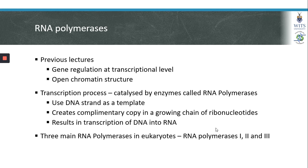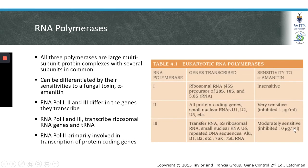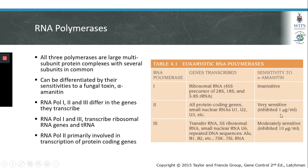In eukaryotes there are three major RNA polymerases: RNA polymerase 1, 2, and 3. All three are large multi-subunit protein complexes with several subunits in common. However, they can be differentiated by their sensitivities to a fungal toxin called alpha-amanitin. RNA polymerase 1 is insensitive to alpha-amanitin, RNA polymerase 3 is moderately sensitive, and RNA polymerase 2 is very sensitive. These differential sensitivities have been used to study the genes transcribed by each polymerase.